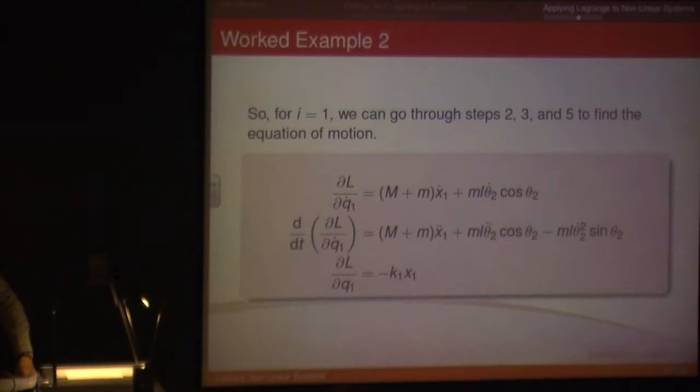Now the first one, we've got X1 dot squared, so we take the derivative, that becomes 2X1 dot, 2 times a half is 1, we end up with just M plus M times by X1 dot. The second term, we've just got X1 dot on its own, so you take the derivative of that, that just disappears, we end up with ML theta 2 dot times by cosine theta 2. So that's the first line.